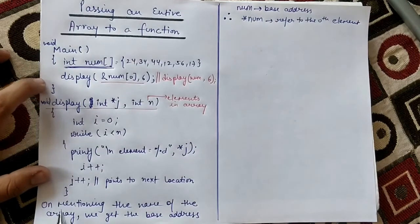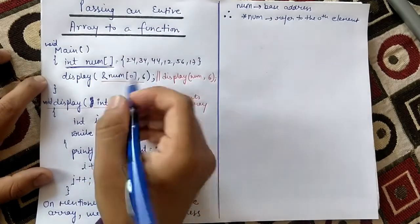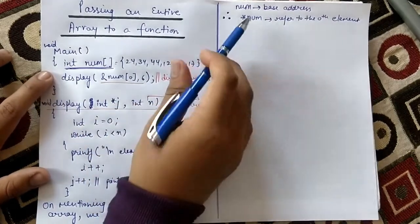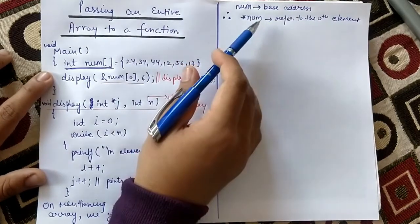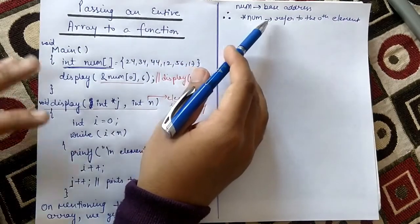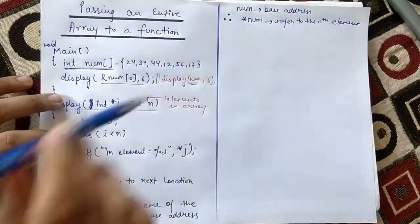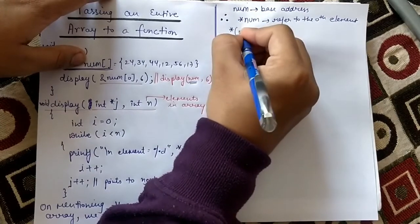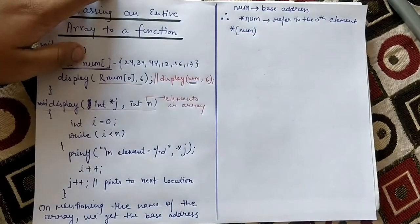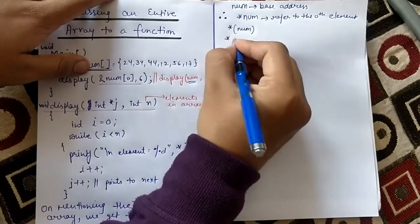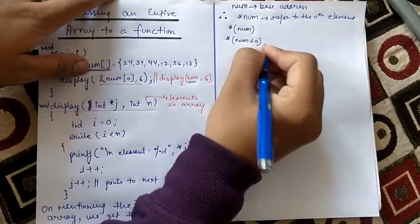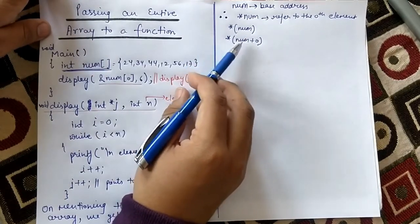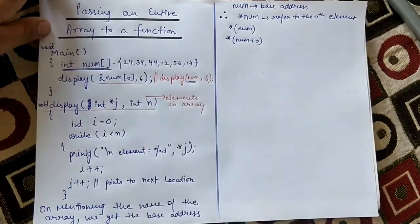Mentioning the name of the array will give the base address, as we have done. `num[0]` we can also write simply as `num` — this means the same thing, the base address. So `num` represents the base address. Now, `*num` — what will `*num` represent? `*num` will refer to the zeroth element of the array. So I can also write this as `*num`, which is the same as `*(num + 0)`, because `num + 0` is `num` only. So `*(num + 0)` represents the zeroth element of the array.